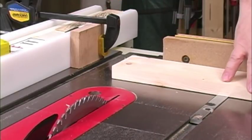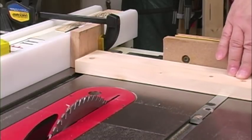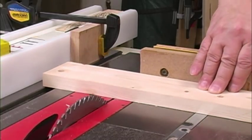Using something as simple as a gauge block can eliminate layout lines altogether. Set this upright, and you can cut parts all day long, and they'll all be the same size.